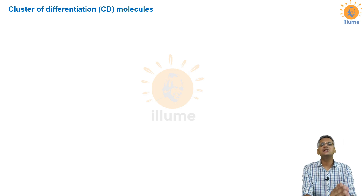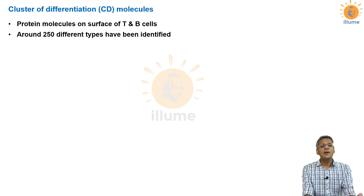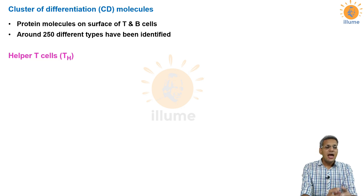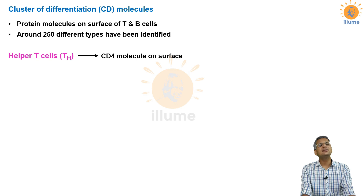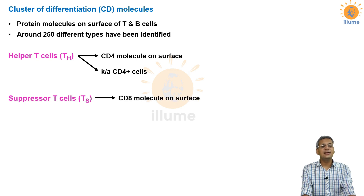Now an important topic: cluster of differentiation molecules, or CD molecules. These are protein molecules present on the surface of T and B cells. Around 250 different kinds of CD molecules have been identified. Helper T cells have CD4 molecules on their surface and are called CD4+ cells. Suppressor T cells have CD8 molecules on their surface and are called CD8+ cells.